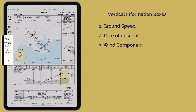And lastly, the latest surface wind components are shown, indicating the crosswind and headwind or tailwind components. The runway for your approach is automatically selected, but you can cycle through other runways by tapping on the box.